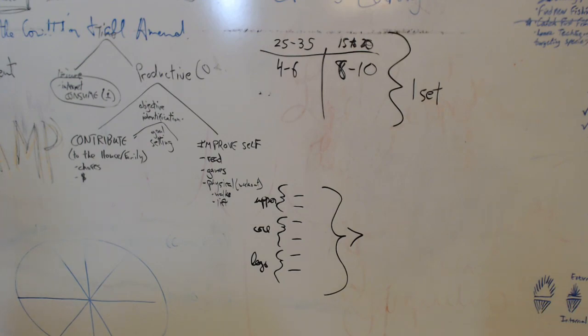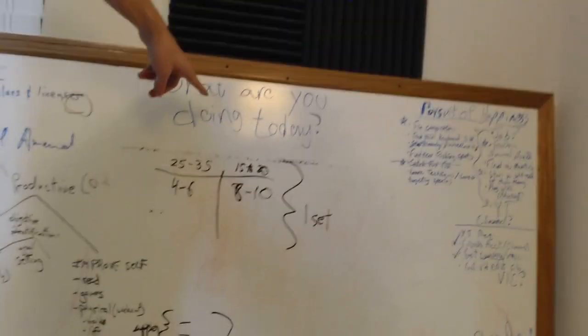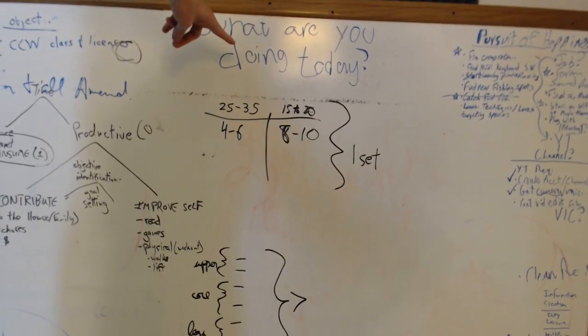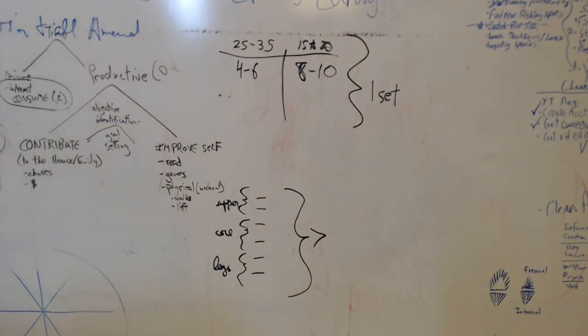How much does a whiteboard that size cost? Depends on if it's used. I think if it's new, you're in the hundreds of dollars to maybe a thousand. This was used when we got it, so I think it was maybe 200 to 300 USD when we got it. This up here: What are you doing today? I think that plays into the be deliberate kind of point, where a lot of days you kind of grind and you coast and you do the same thing you've always done.